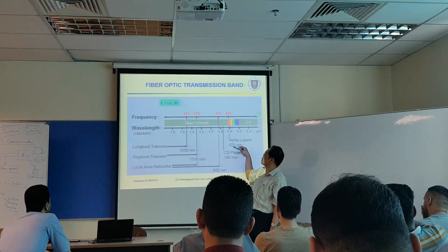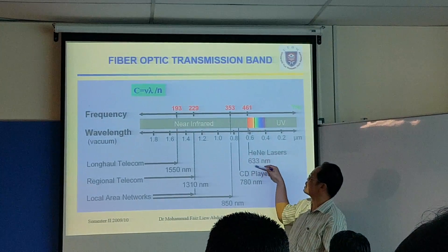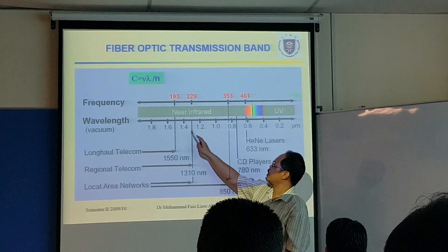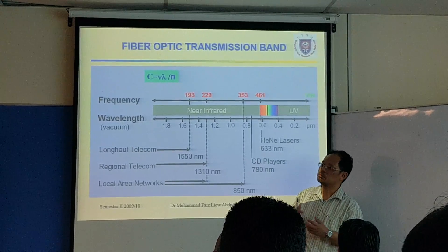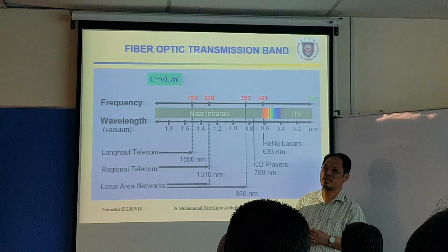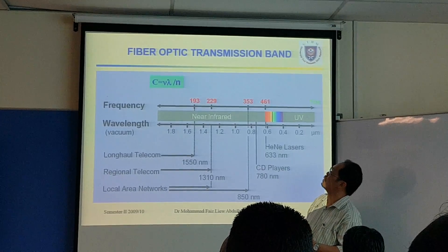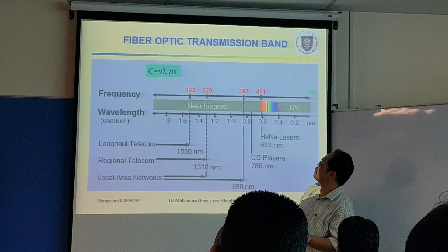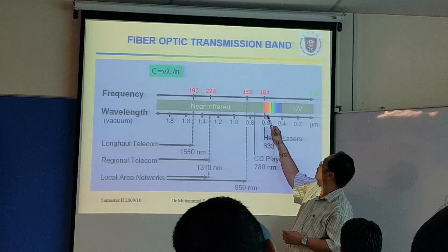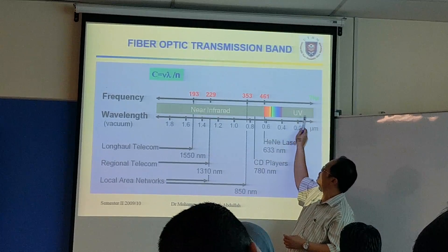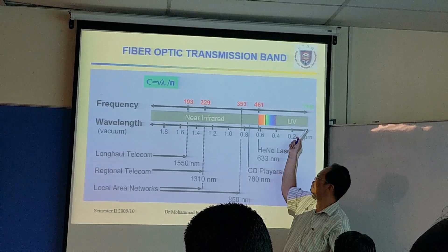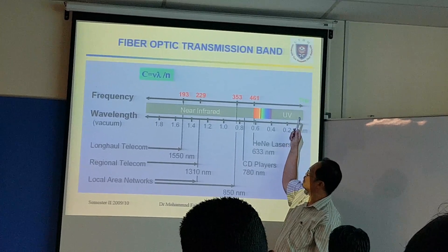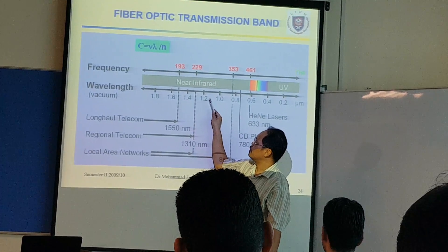Eon laser — this one is used for industrial 633nm. These are the range of light sources that you can use for optical fiber. This UV you cannot use because it's sunlight. So this is within the range.